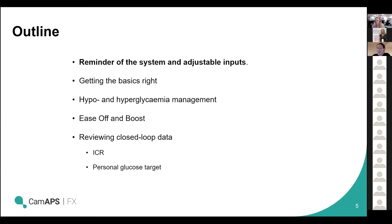We'll cover what the adjustable inputs are that are going to make a difference to closed loop functioning, the importance of getting the basics right, some ideas around the differences in management of hypo and hyperglycemia with closed loop systems, the use of ease off and boost and how they can really help improve glucose control, and then we'll look at reviewing closed loop data and how to adjust insulin carbohydrate ratios when using a closed loop system and using the personal glucose target.